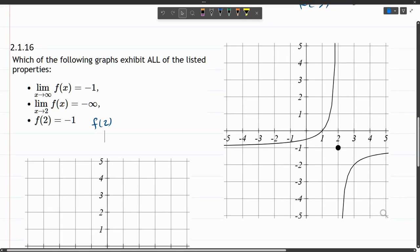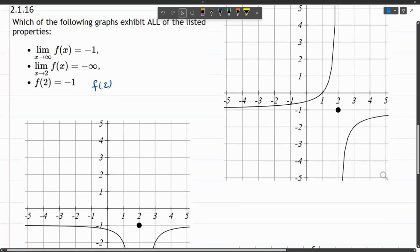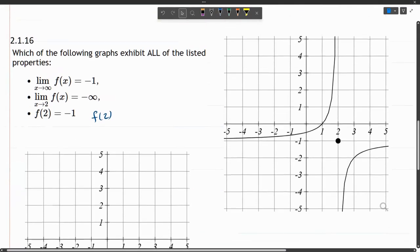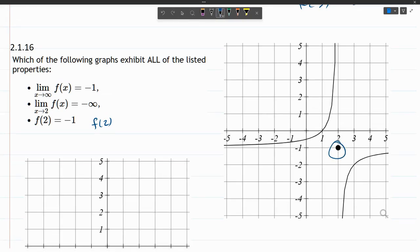So if I plug in f of two, what is it? We'll go ahead and do that to each graph here. This first graph on the right, that point right there is the value when x equals two. On this one, f of two is equal to the y value of negative one.